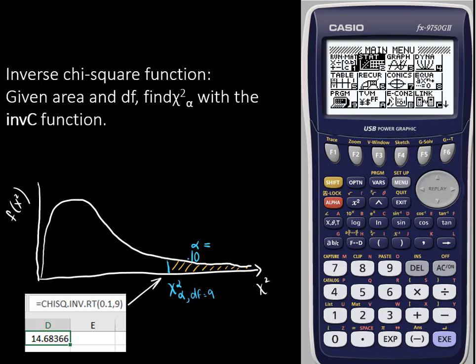In this video we'll look at how to find the chi-square value when we're given area under the curve and degrees of freedom. This is useful if you're conducting a hypothesis test for a population variance.